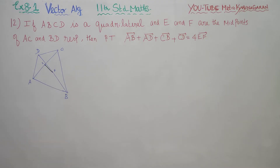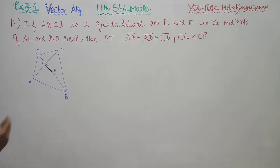Now you can see AB vector plus AD vector plus CB vector plus CD vector. First, we will start with AB vector.